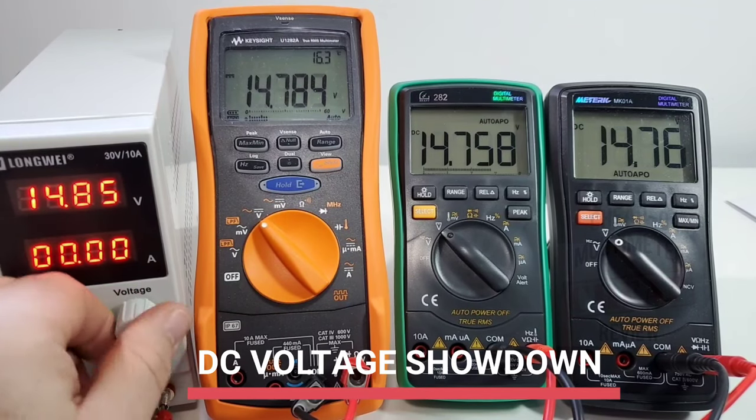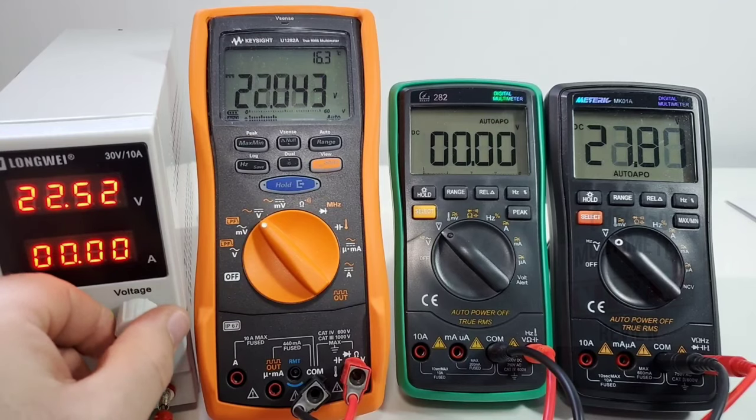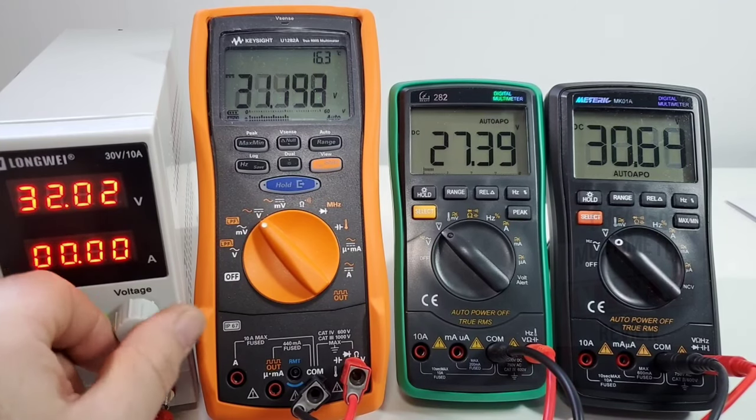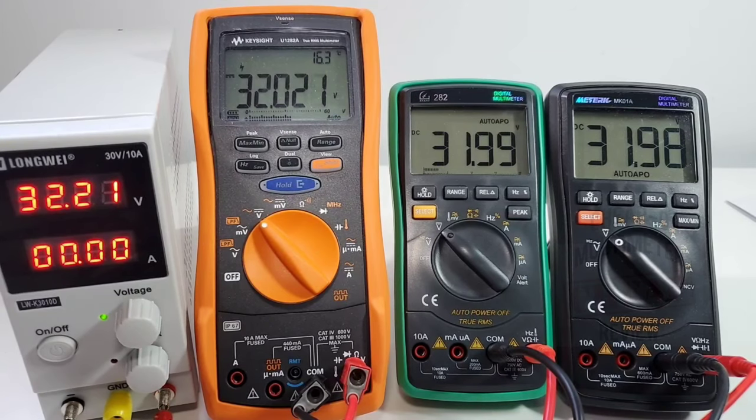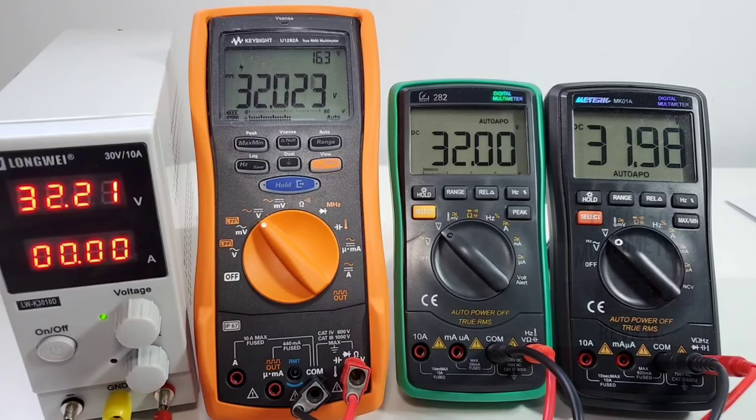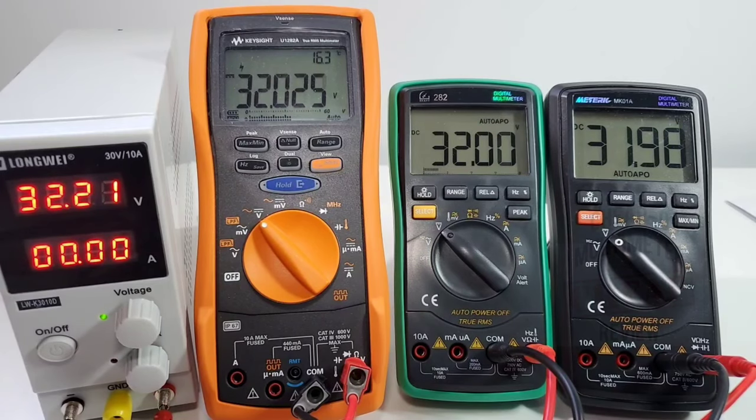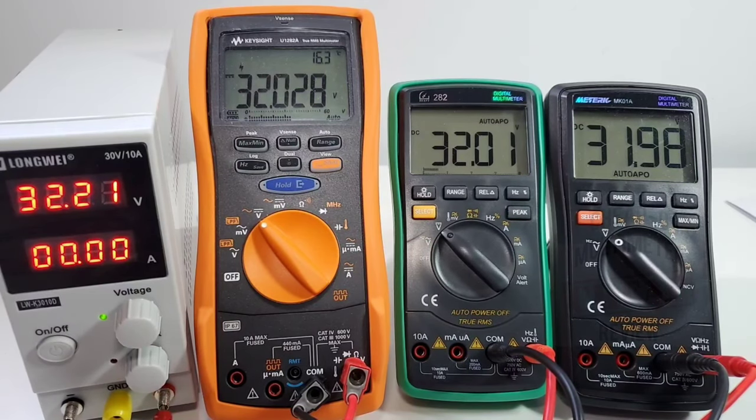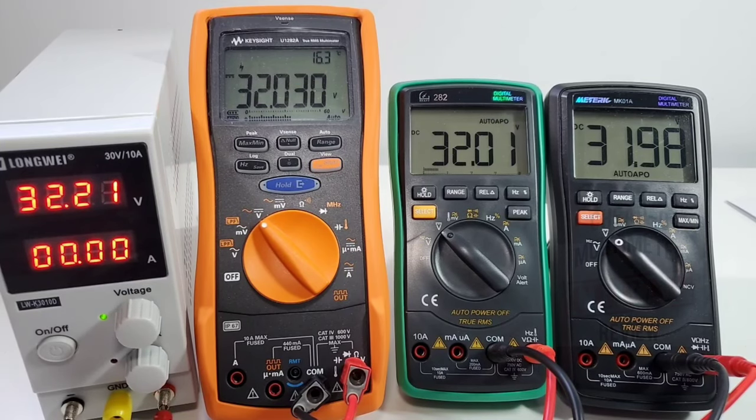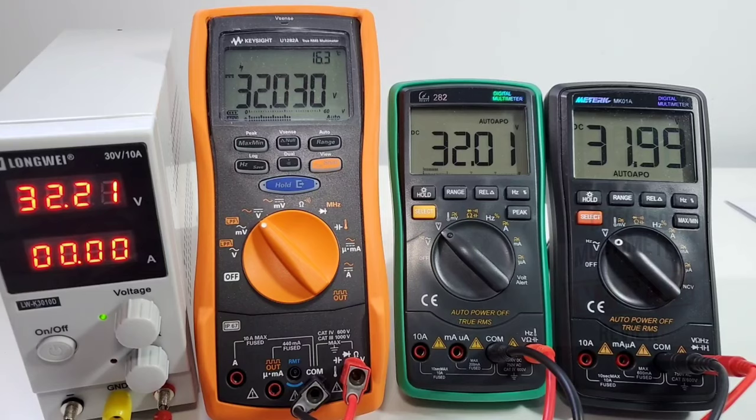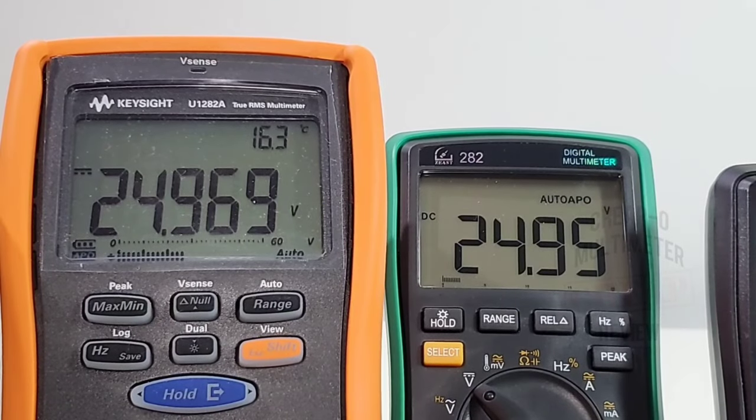10.93 for the Keysight, 10.92 for the 282, and 10.91 for the MeterK. All fairly close. I'm gonna take it right up to the max now—we should hit 30 volts. 32.19 volts maxed out. 32.021 for the Keysight, 32 spot-on even for the Zeest, and 31.98 for the MeterK. Look at that, wow. Excellent stuff. In terms of overall DC accuracy, they are all fairly neck and neck.